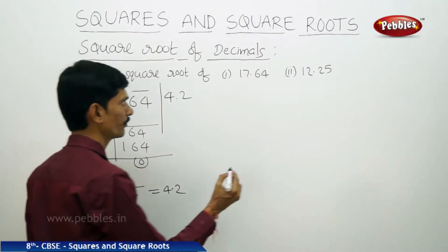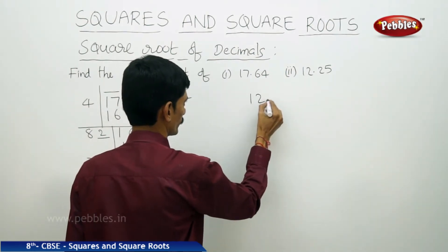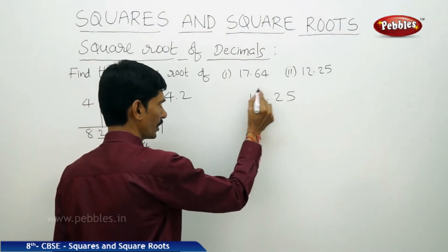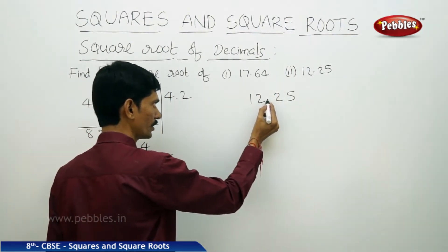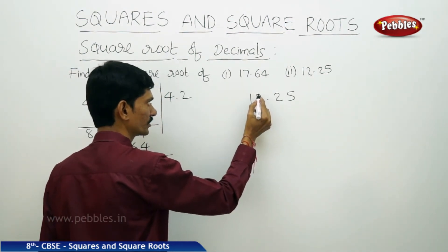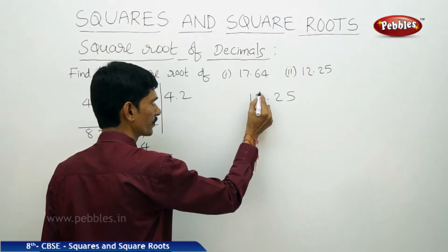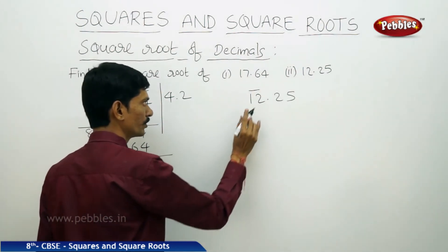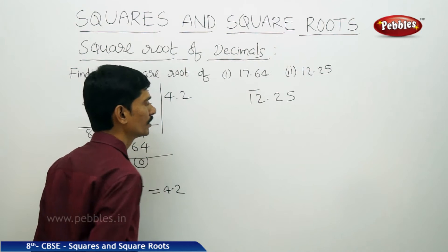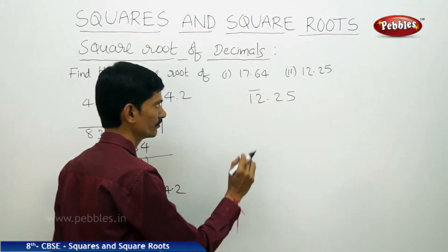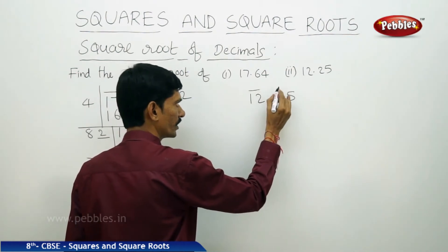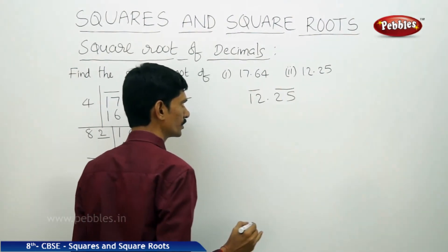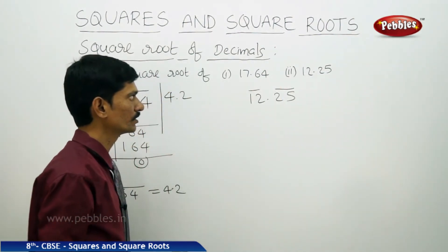Now we will solve the second problem: 12.25. Here also there are two parts — integral part and decimal part. In the integral part, we place the bar over every two digits from unit's place. From unit's place 2, we use bar over 12. There are only two digits, so there is only one bar. In the decimal part, we use the bar from left to right from the first decimal place, over 25. There are only two digits in the decimal part, so there is only one bar.